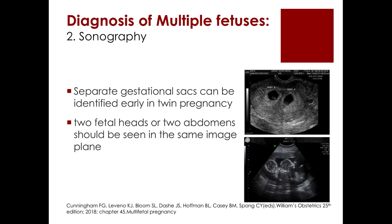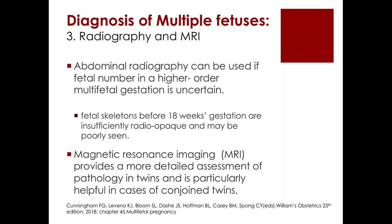The confirmatory test is sonography — separate gestational sacs can be identified early in twin pregnancy, or two fetal heads or abdomens can be seen in the same image plane. Radiography and MRI can also be used; abdominal radiography is helpful when fetal number in higher-order multifetal gestation is uncertain, and MRI provides detailed assessment of pathology in twins, particularly in cases of conjoined twins.